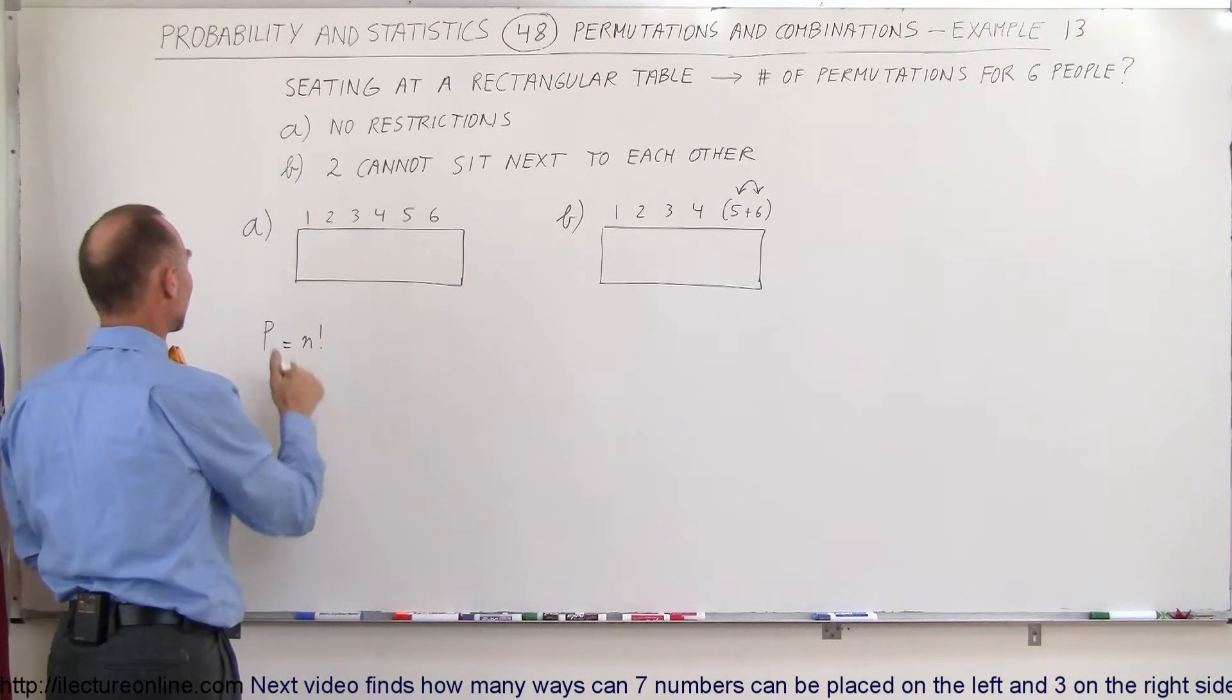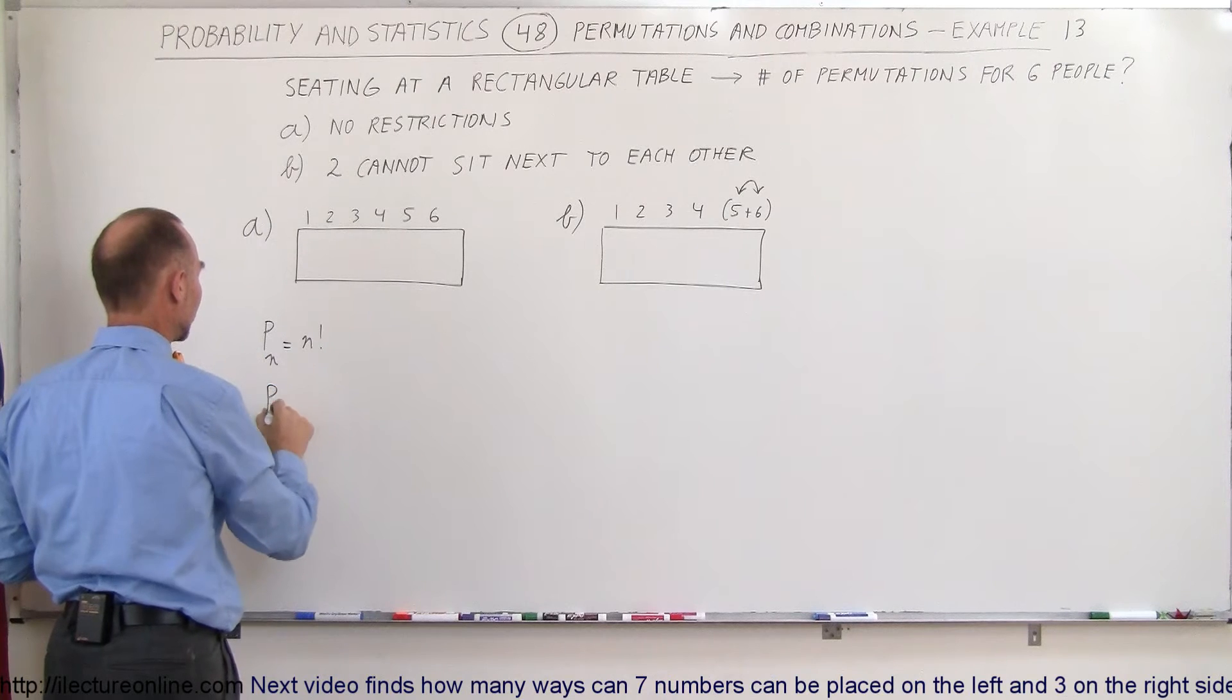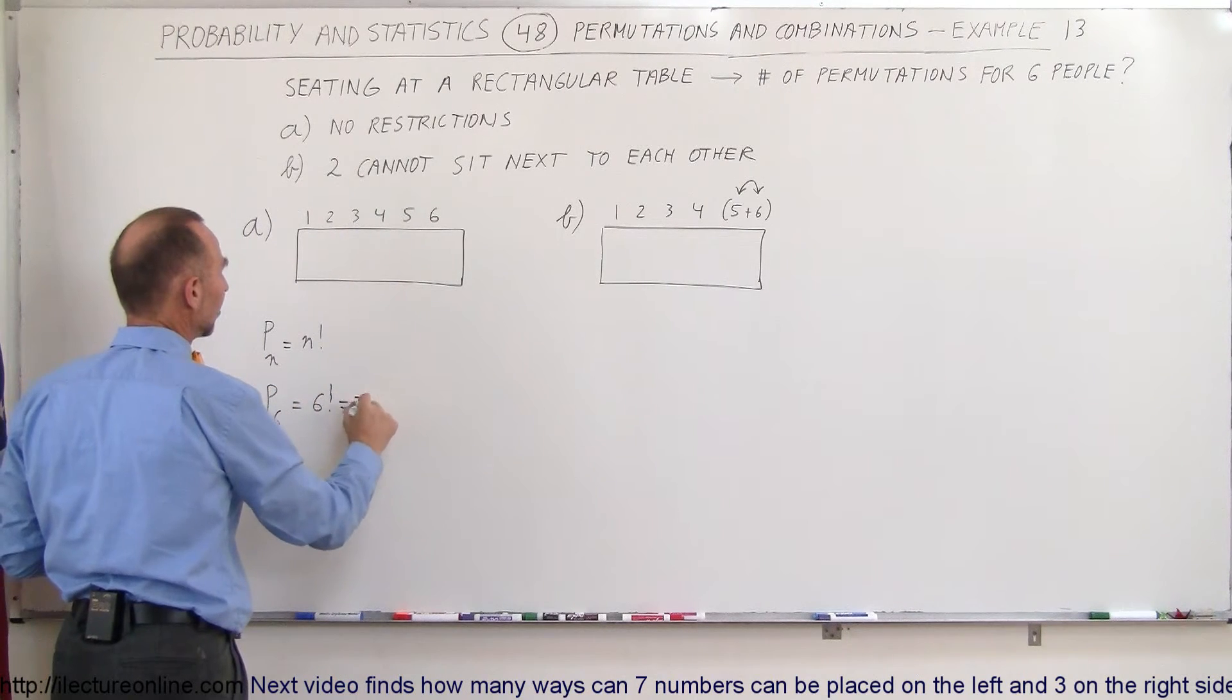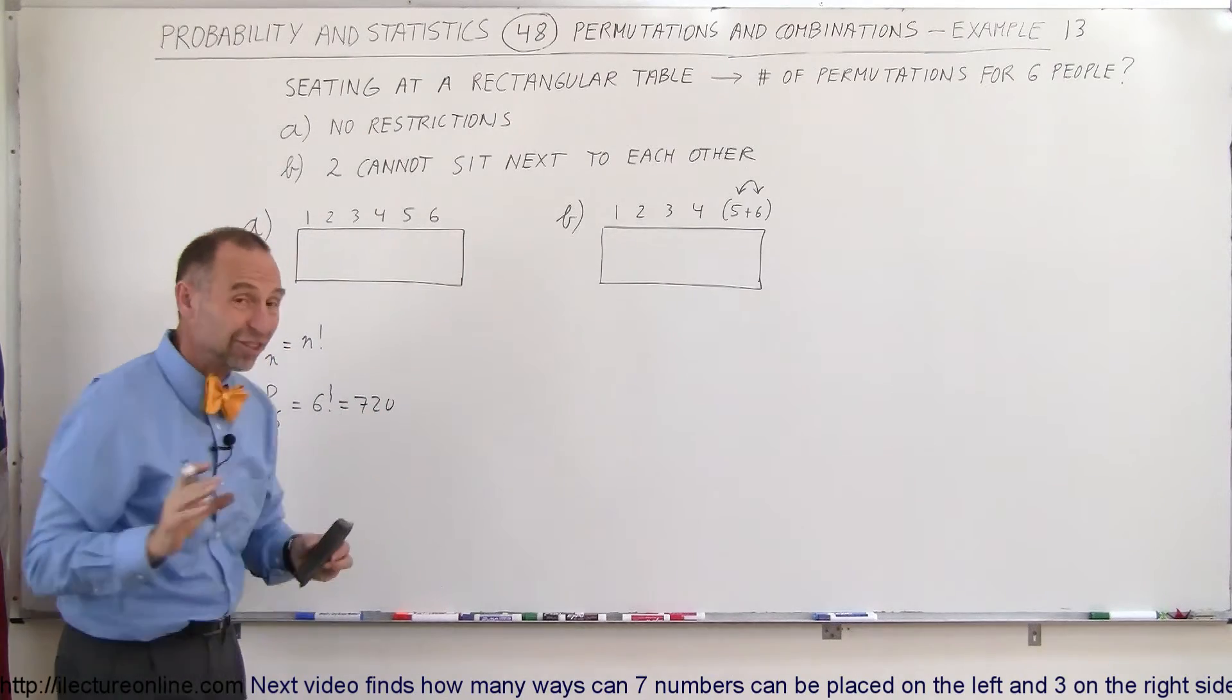I got ahead of myself. I wanted to show you the general formula. So for n people it's n factorial, so the permutations for six people is 6 factorial.